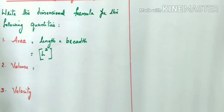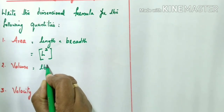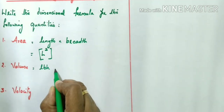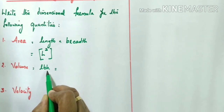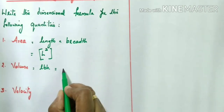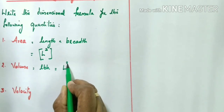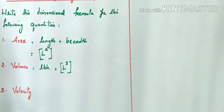Similarly, what is the dimensional formula for volume? We know volume is equal to length into breadth into height. Length, breadth, and height all have the same dimension L. So the dimensional formula for volume is [L³].